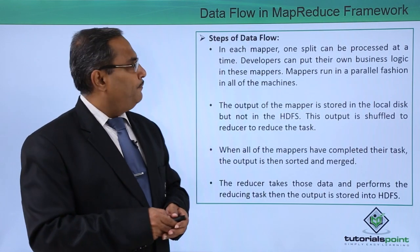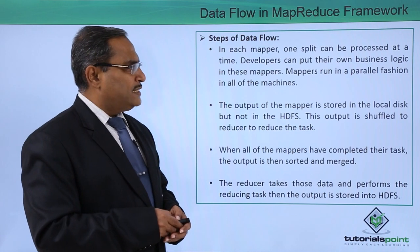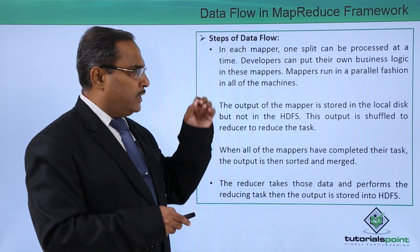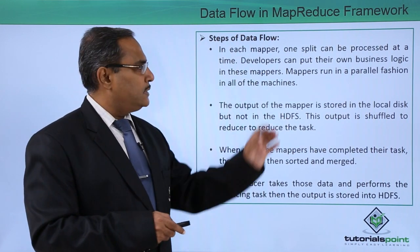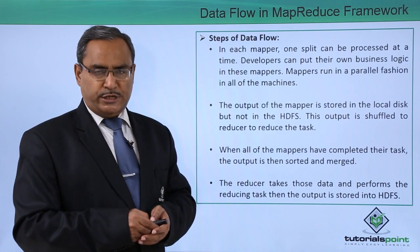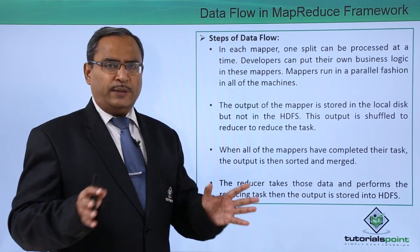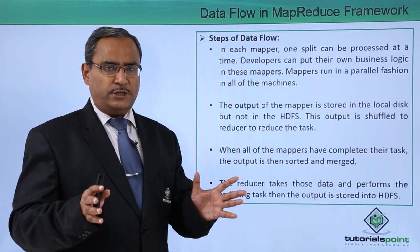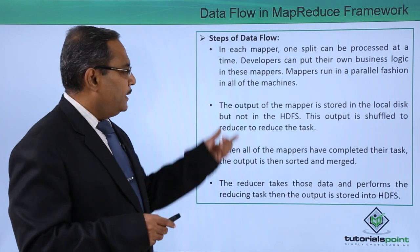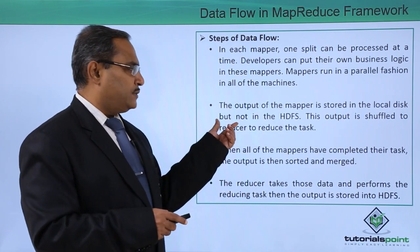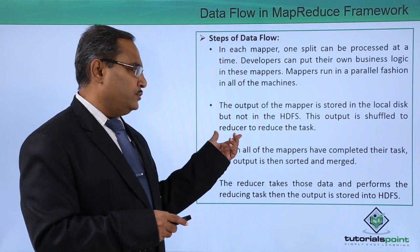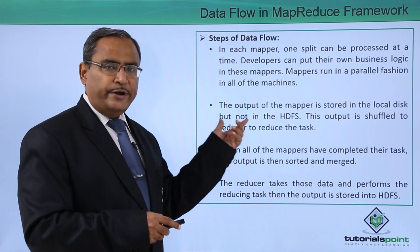Steps of data flow: in each mapper, one split will be processed at a time, and developers can put their own business logic in these mappers. Mappers run in parallel fashion on all of the machines, processing data simultaneously. The output of the mapper is stored on the local disk, not onto HDFS, and this output is shuffled to the reducer to perform the reduce task.